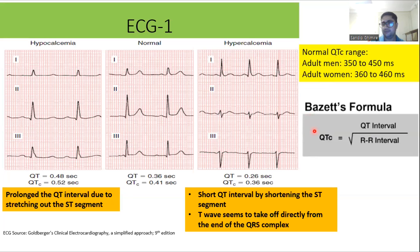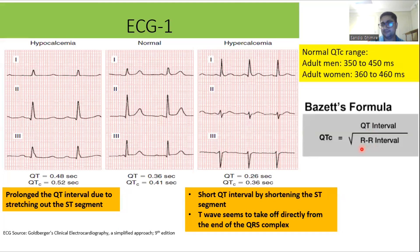To calculate the QT interval, there are many formulas, but one of the most commonly used is Bazett's formula. You can calculate the corrected QT interval using this formula: QT interval divided by the square root of the RR interval.